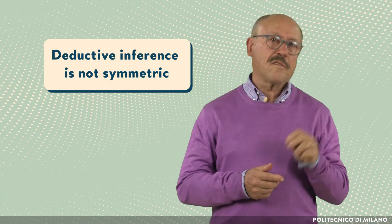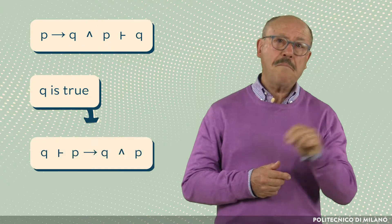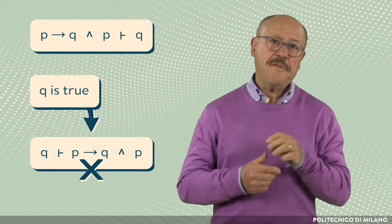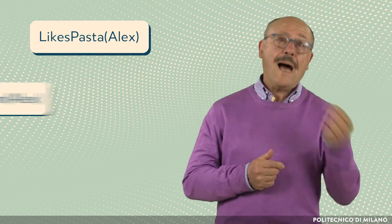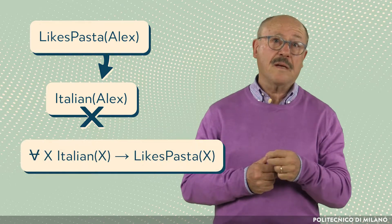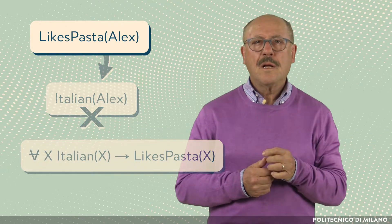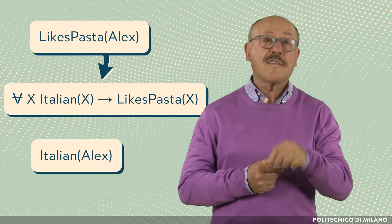Deductive inference is not symmetric. For example, from 'p implies q' and p, we can derive q — but knowing that q is true, we cannot derive 'p implies q' and p. Specifically, having observed that Alex likes pasta, we cannot derive the truth of 'Alex is Italian,' even assuming that we know that Italians like pasta. In fact, Alex could be Spanish. Nor can we derive that Italians like pasta, assuming that we know that Alex is Italian.